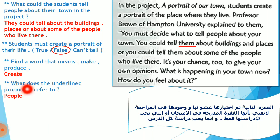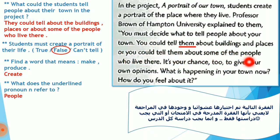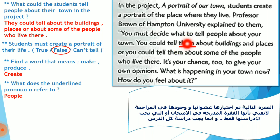Now for the next question: what does the underlined pronoun refer to? We have the pronoun underlined in: 'You could tell them about buildings.' Looking at the sentence before it — 'You must decide what to tell people about your town. You could tell them about the buildings and places or about some of the people who live there' — 'them' refers to people. To confirm, we replace 'them' with 'people': 'You could tell people about the buildings and places' — the meaning stays correct, confirming that 'them' refers to people.